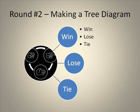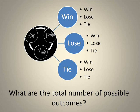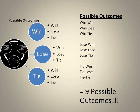Continuing with our tree diagram, we can see what happens in round two. If you won the first round, your possibilities the second round are the same — you can either win, lose, or tie. If you lost the first round, you can still win, lose, or tie. And if you tied the first round, you can still win, lose, or tie. So what are the total number of outcomes after round two? The chart on the right represents what we call the sample space, or the total number of outcomes. You can have win-win, win-lose, win-tie, lose-win, lose-lose, lose-tie, tie-win, tie-lose, or tie-tie — which equals nine possible outcomes.